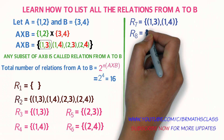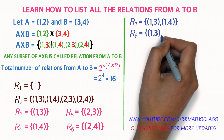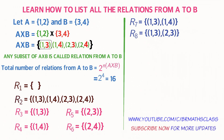R8, the eighth relation: again take the first element ordered pair (1,3). Now move to the right — the immediate next element after (1,3) is ordered pair (1,4), which we already used in R7. The next element after that is ordered pair (2,3). So R8 equals the set containing ordered pair (1,3) and ordered pair (2,3).